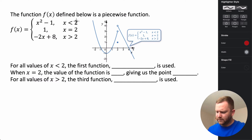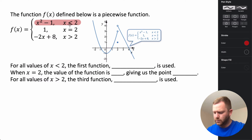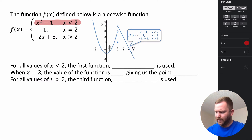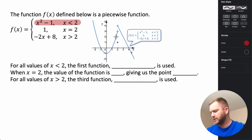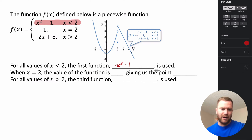Looking at the first portion, x squared minus one for x less than two — that tells us that when x values are less than two, so to the left of two, our graph is defined by this parabola. This quadratic is shifted down one and is only graphed for x values less than two.